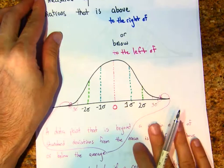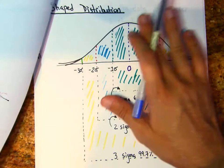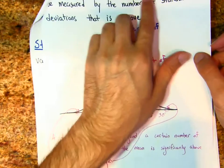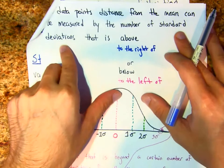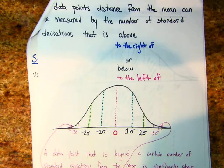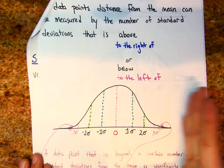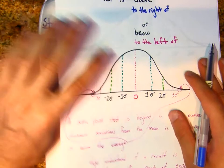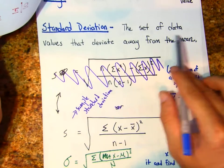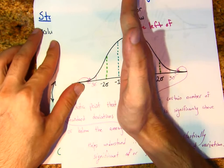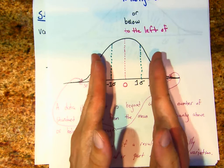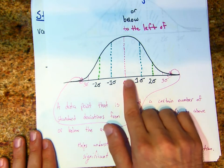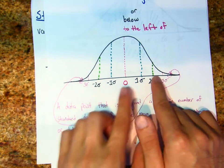Data points' distance from the mean can be measured by the number of standard deviations that is above — to the right — or below — to the left — of the mean. On a standard bell curve, the mean is the center, and the standard deviation describes how much spread there is from the center. One standard deviation to the right, one to the left, two to the right, two to the left, and so on.